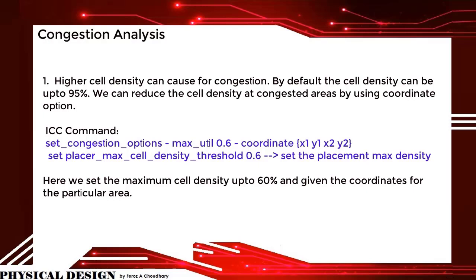We can reduce the cell density in congested areas by using the coordinate option. The ICC command used is: set_congestion_option -max 0.6 with coordinates x1, y1, x2, y2 as the bounding box. Set the placer max cell density threshold to 0.6, that is 60%. Here we set the maximum cell density up to 60% and give the coordinates for the particular area.